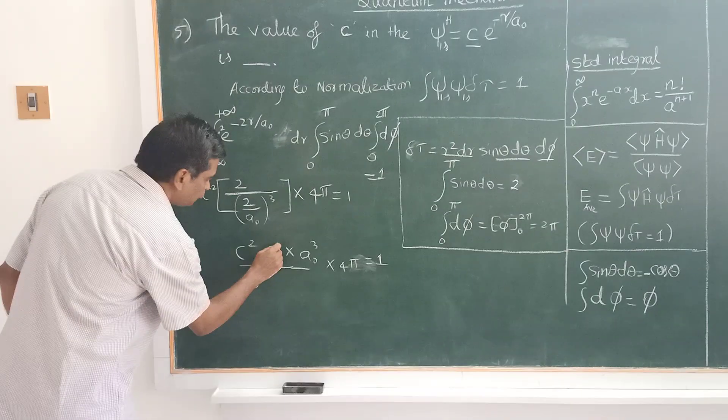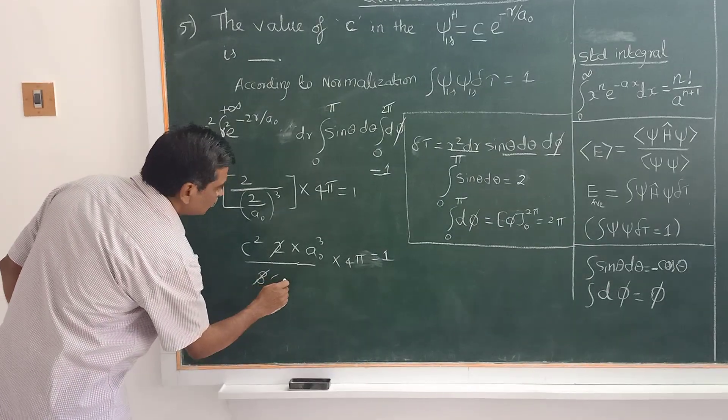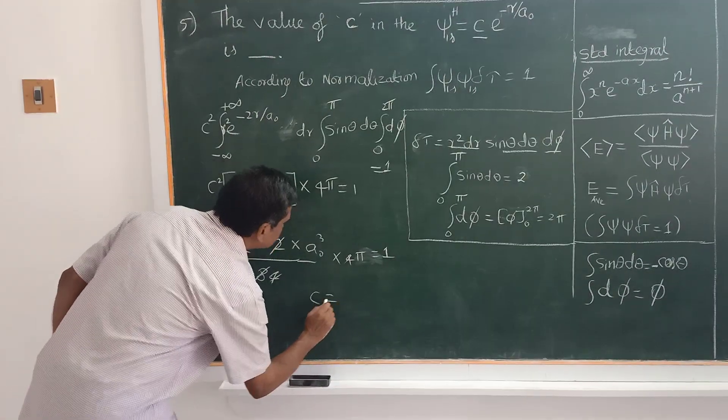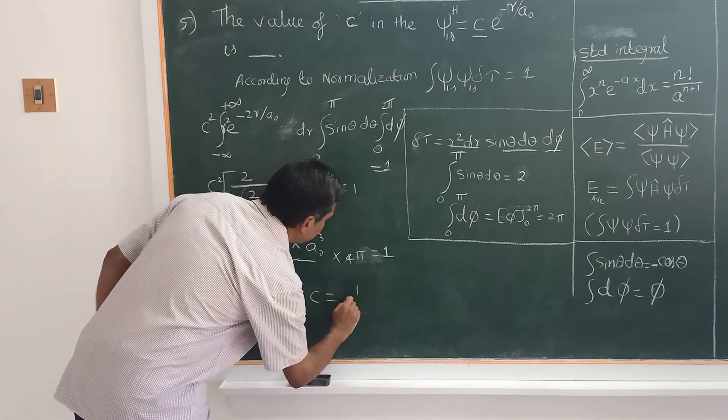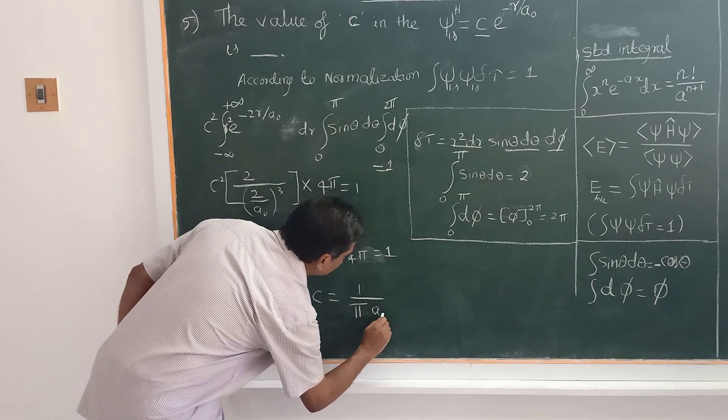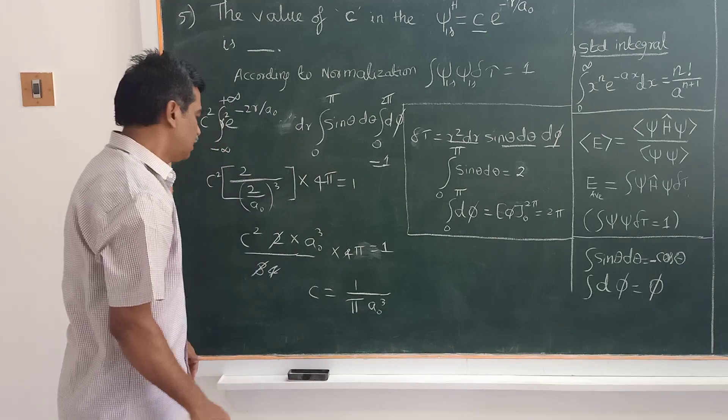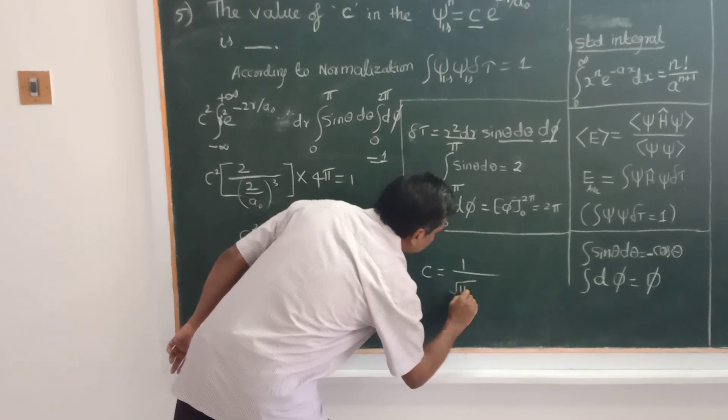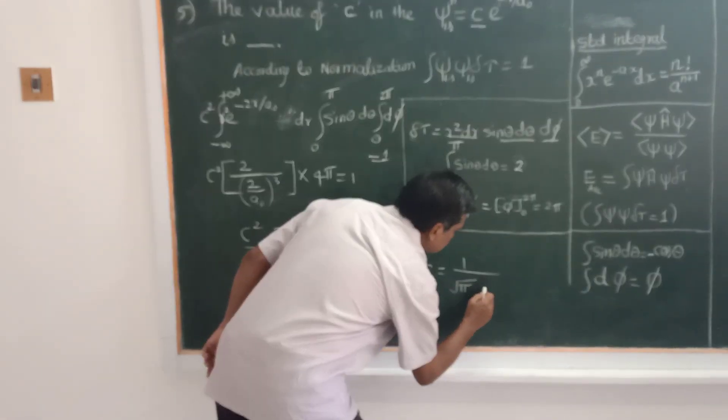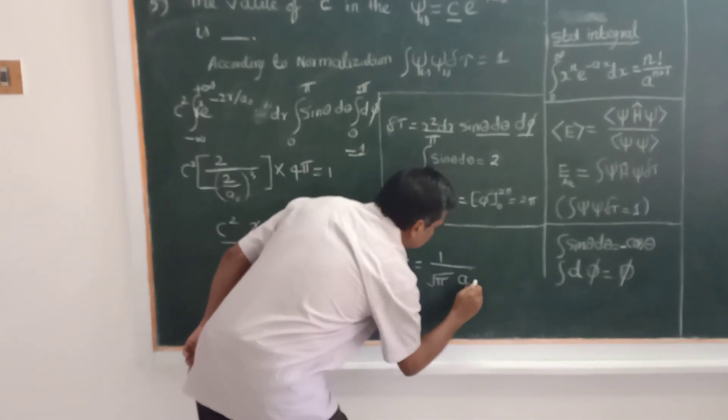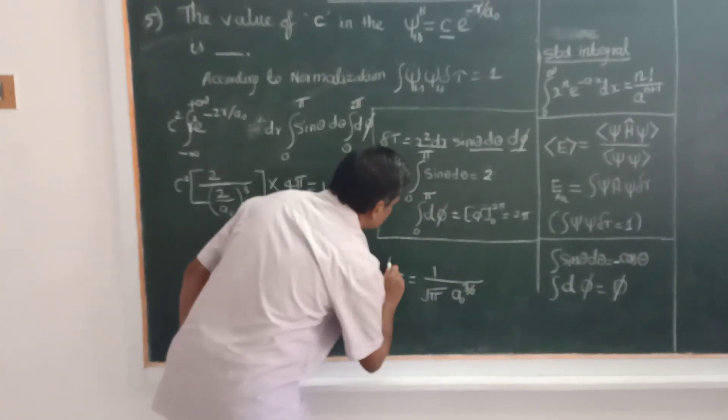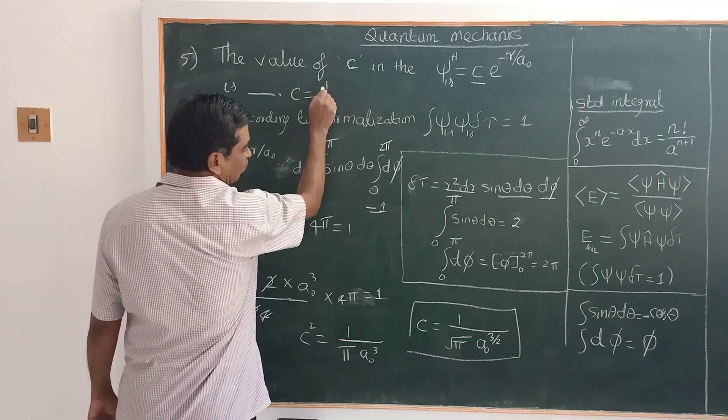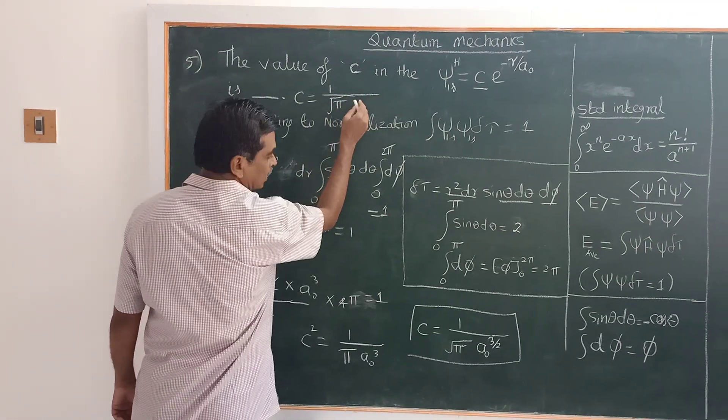So on simplification, 4 pi cancels. Therefore, C squared equals 1 by pi a naught cubed. Therefore, C equals 1 by square root of pi a naught to the power 3 by 2. Thank you.